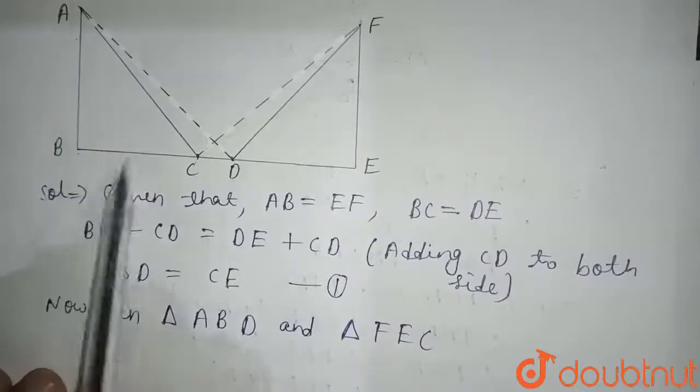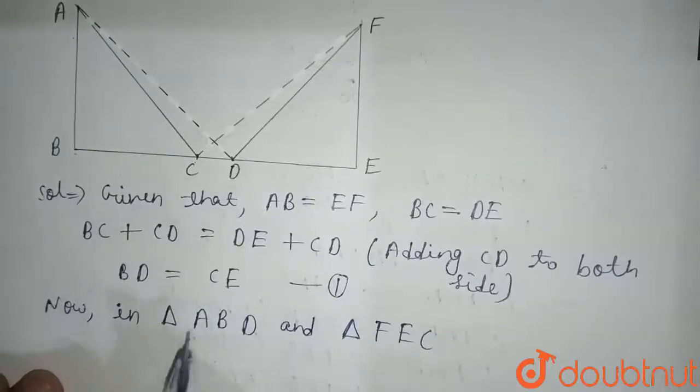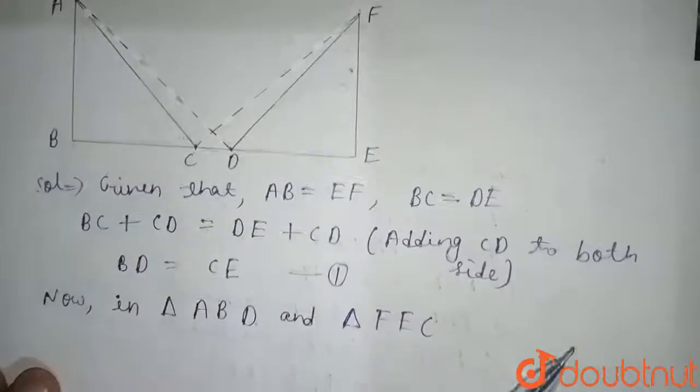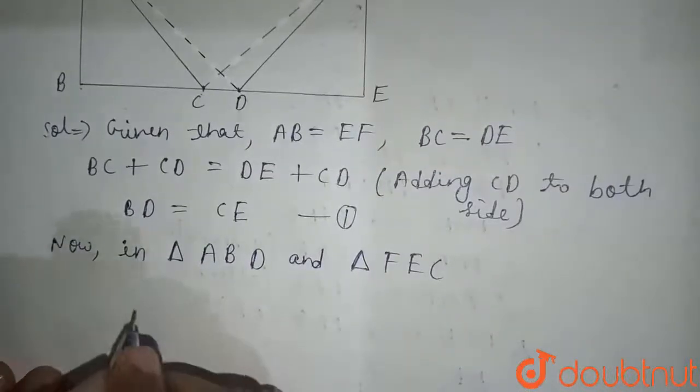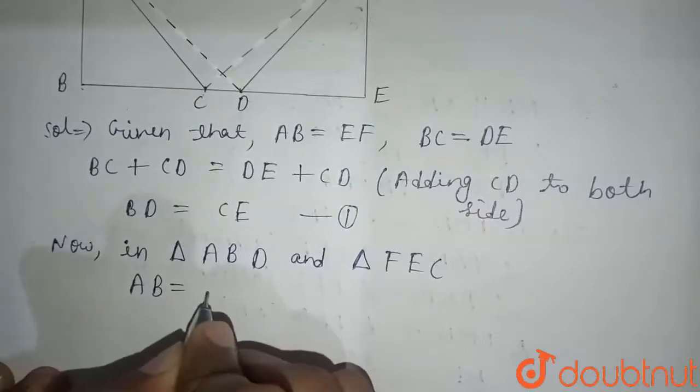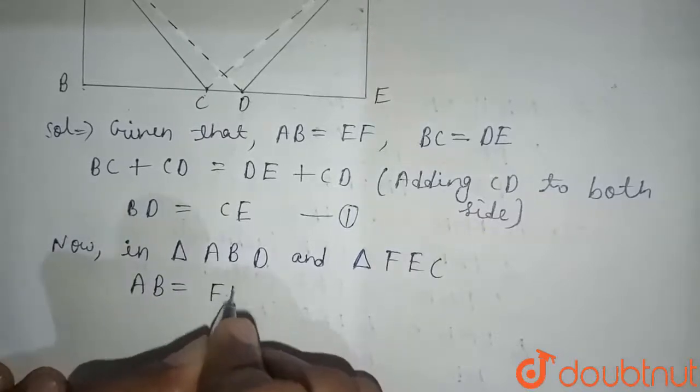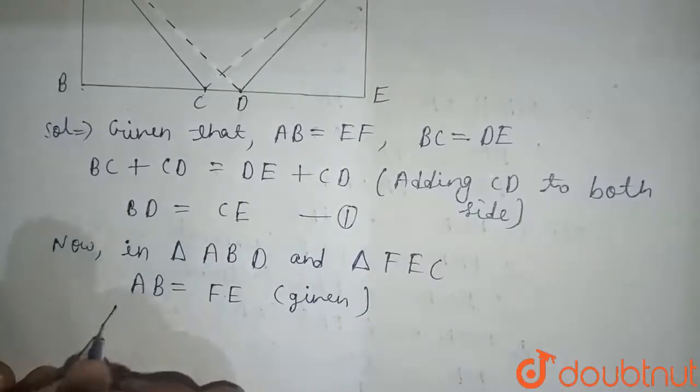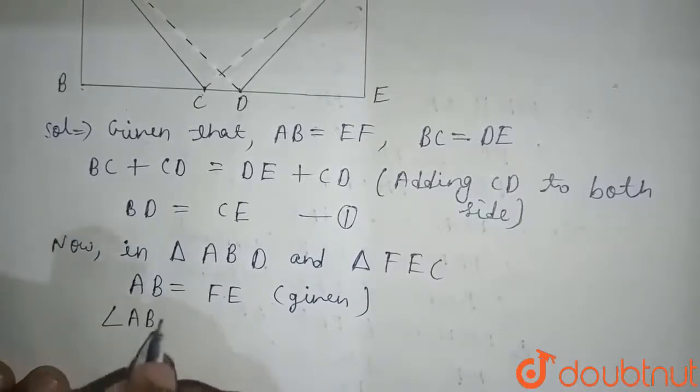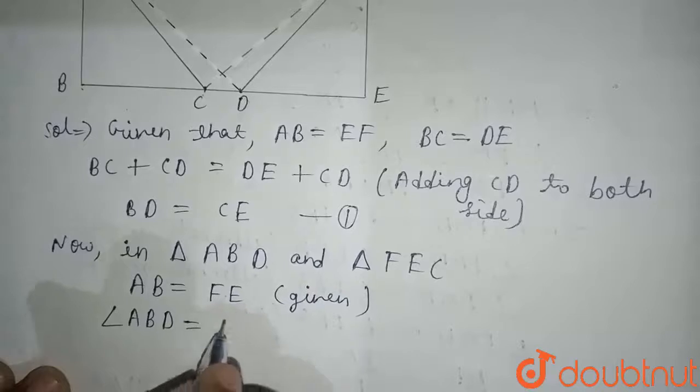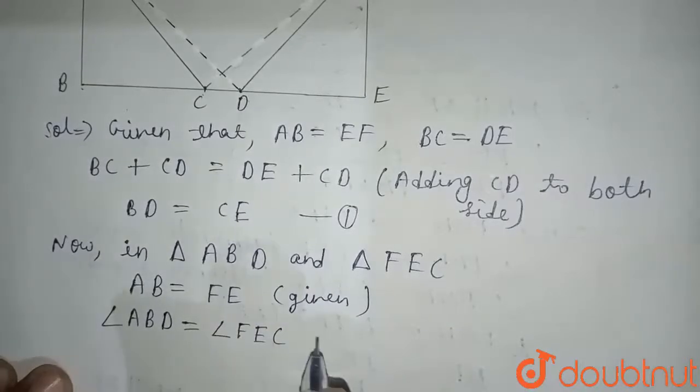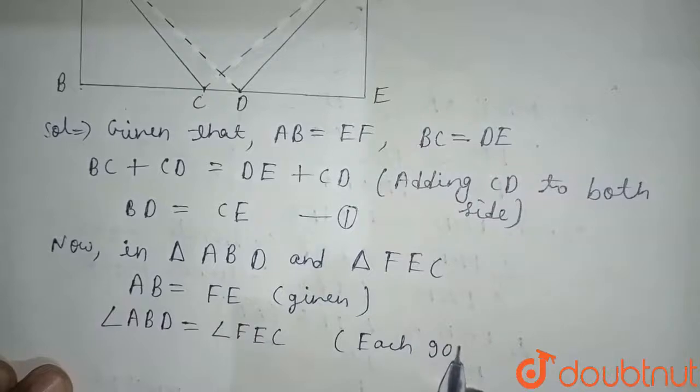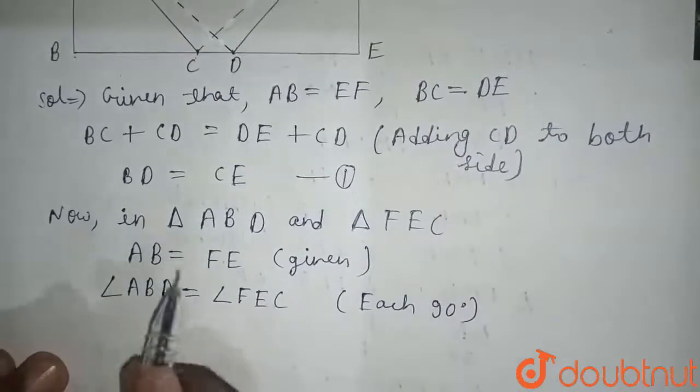So this angle is 90 degrees, so this will also be equals to 90 degrees. And AB equals FE, it is also given in the question.